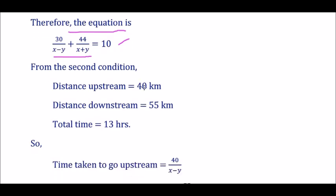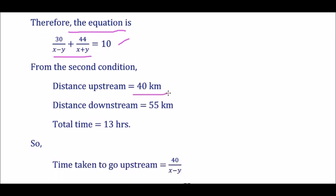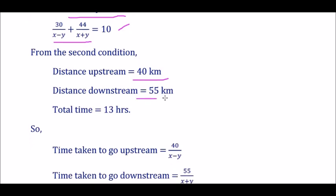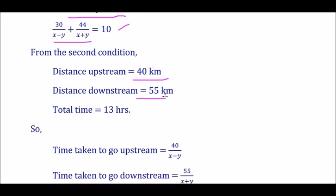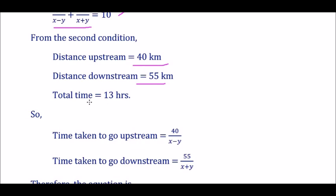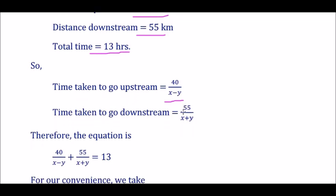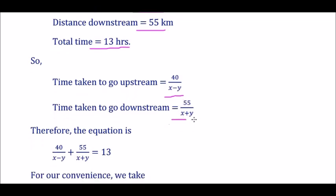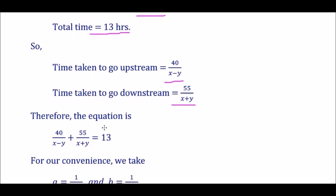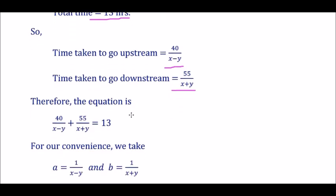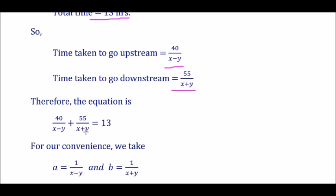From the second condition, the distance upstream is 40 kilometers, the distance downstream is 55 kilometers, and the total time given is 13 hours. The time taken to go upstream is 40 divided by (X minus Y), and the time to go downstream is 55 divided by (X plus Y). Therefore we formulate the equation: 40/(X − Y) + 55/(X + Y) = 13.